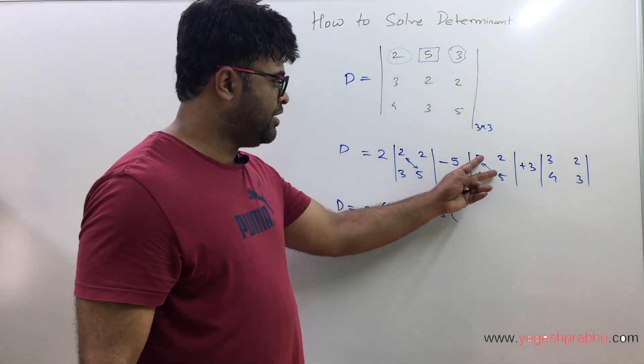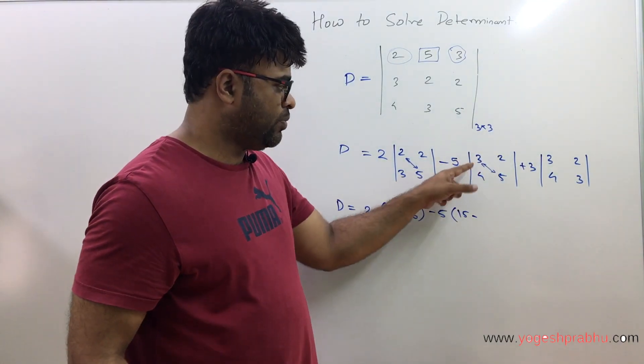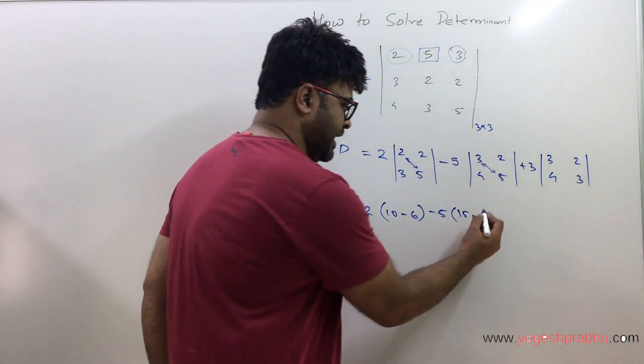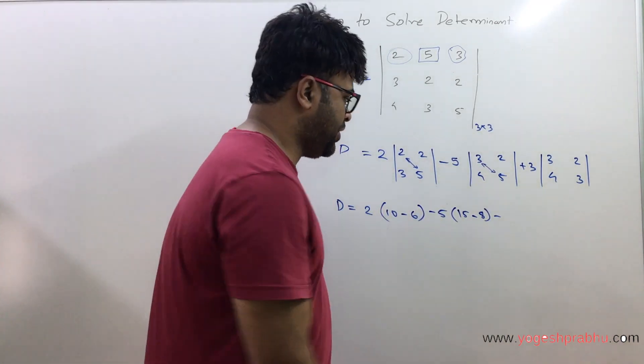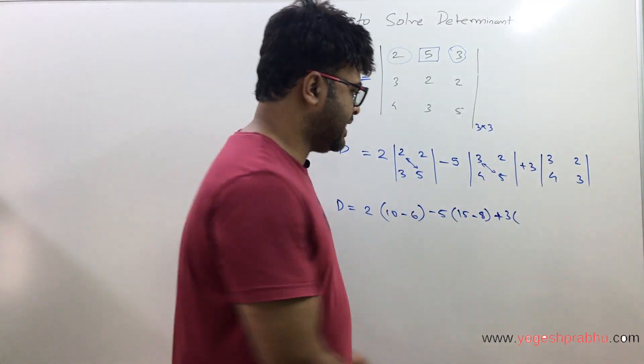Don't do 4 into 2 minus 3 into 5. It's always 3 into 5 minus 4 into 2, that's minus 8. Then you have plus 3, and then you will multiply 3 into 3, that is 9, minus 4 into 2, which is 8.